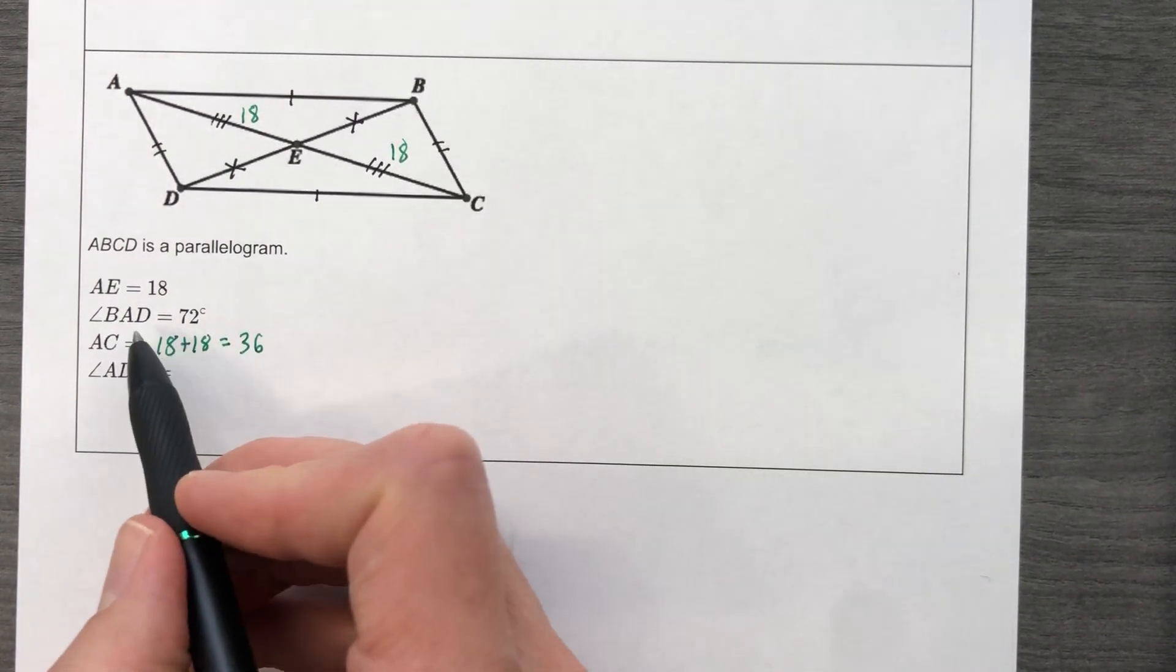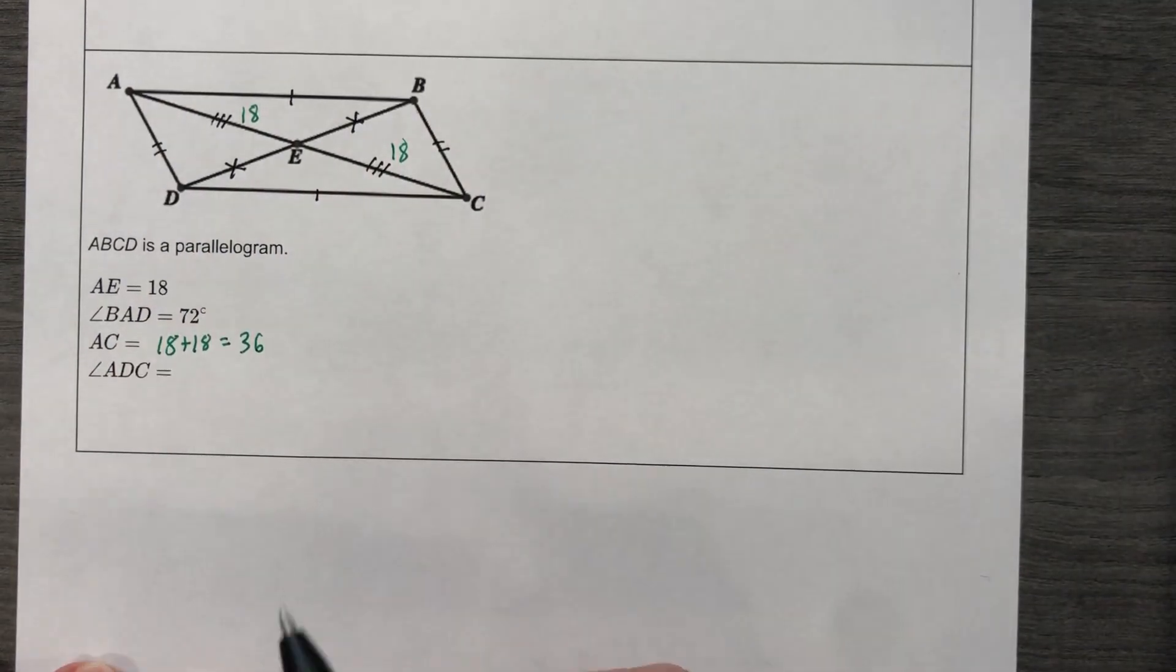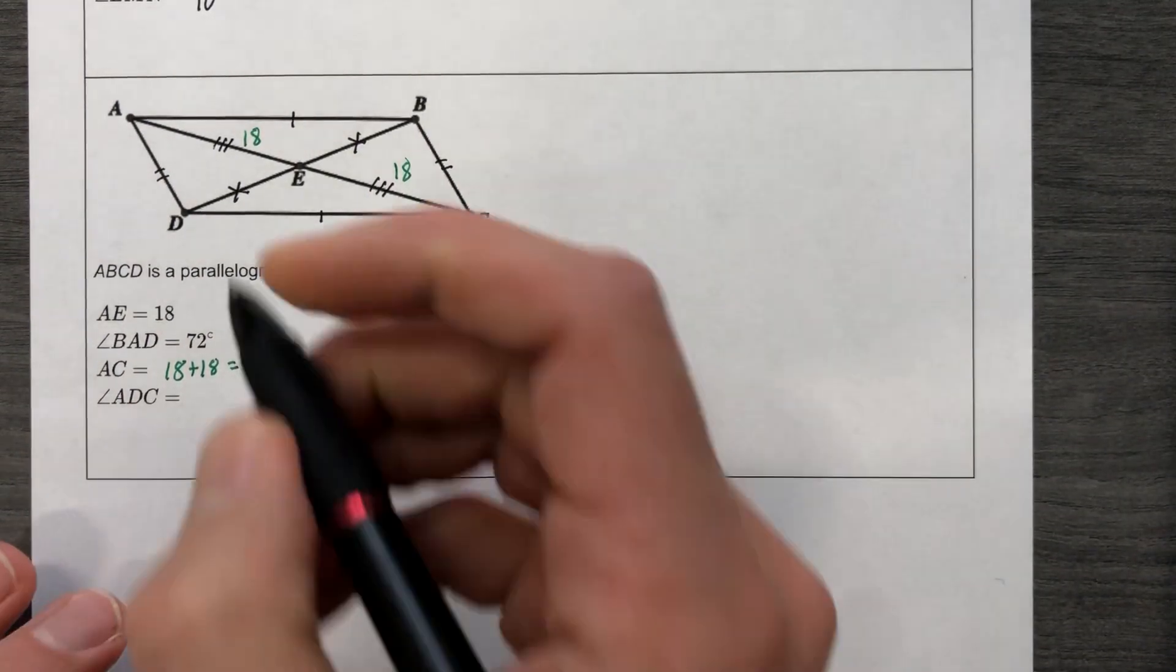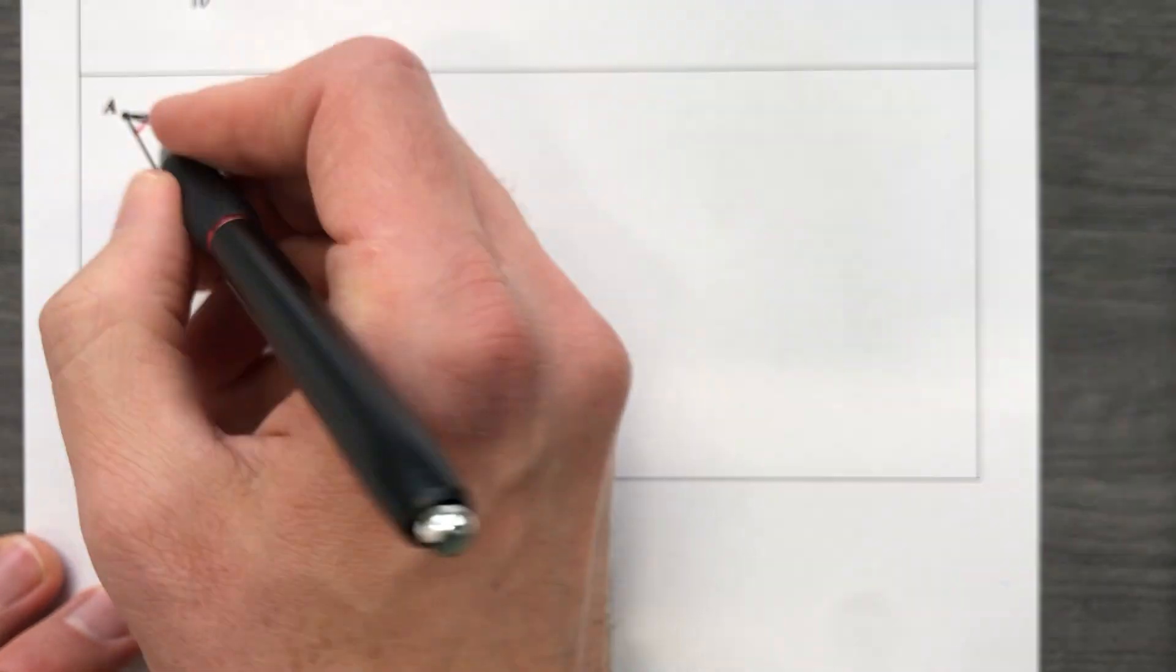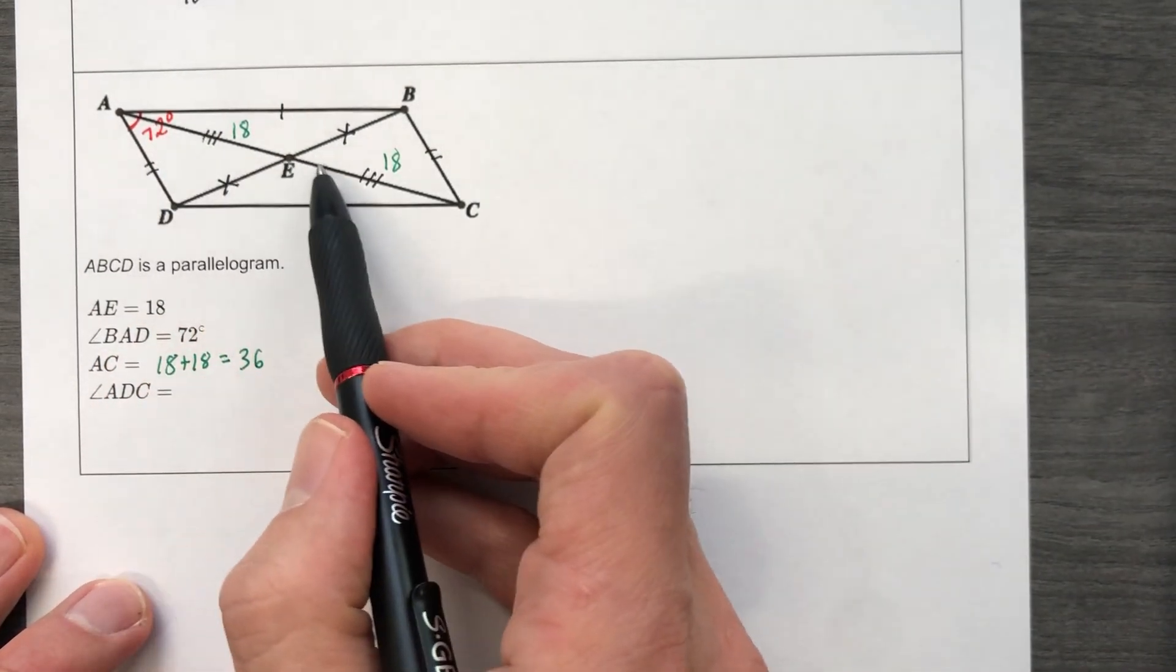They also tell us that angle B, A, D, bad is 72. So this angle, the bad one is 72 degrees. And it's that entire thing. We're not worrying about that little segment in there.